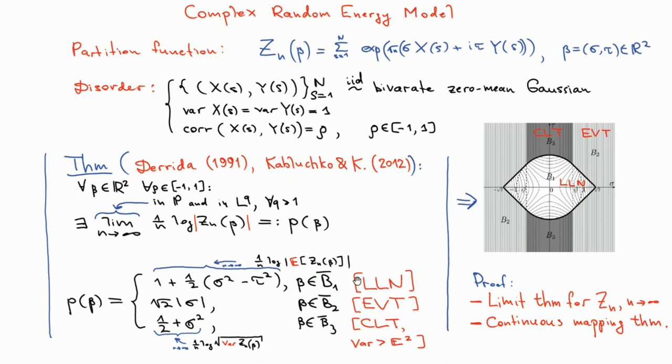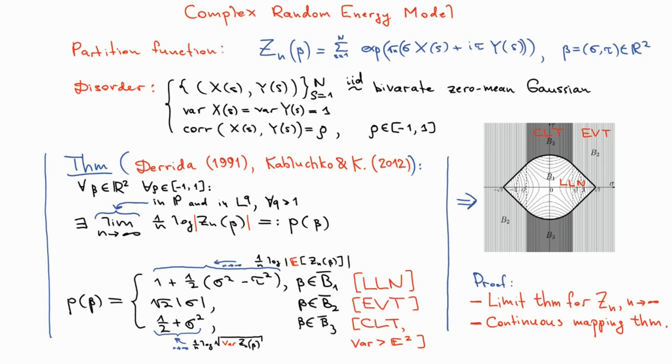The law of large numbers phase inside of this I-shaped B1 area, and the extreme value regime B2 area are quite similar, where the main contributions come respectively from the expected partition function or the summands with the maximal real part of the energy. Whereas this new regime B3 is the regime where the central limit theorem is valid, which is in fact valid in the whole vertical strip from minus square root of 2 over 2 to square root of 2 over 2. But in this gray zone B3, the standard deviation turns out to be larger than the expectation, and so the main contribution to the log partition function comes from the standard deviation.